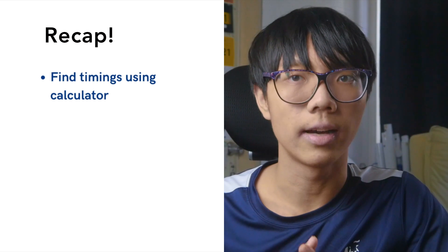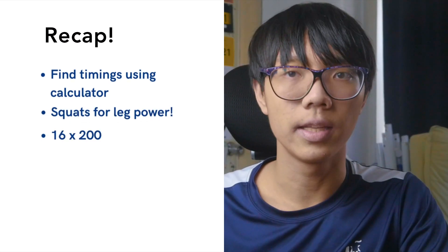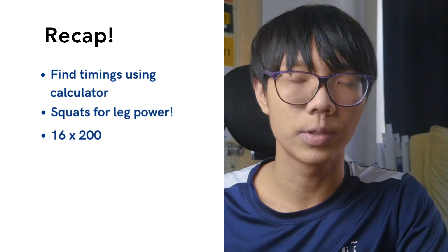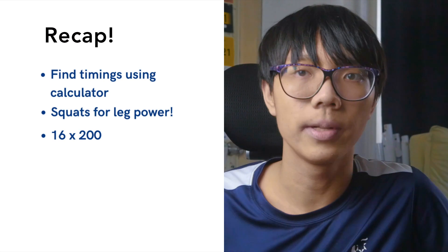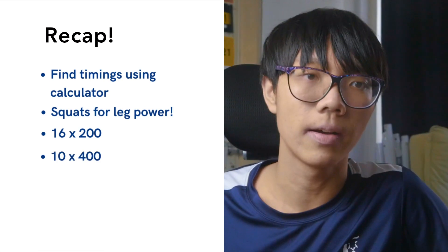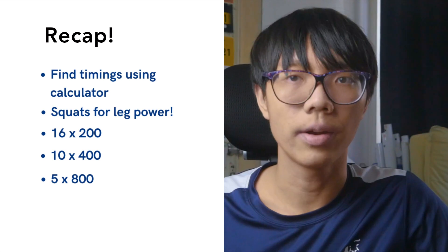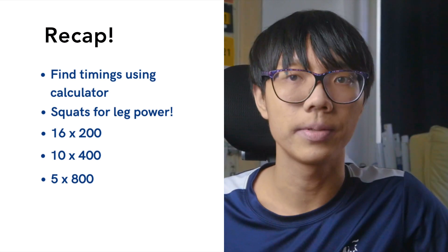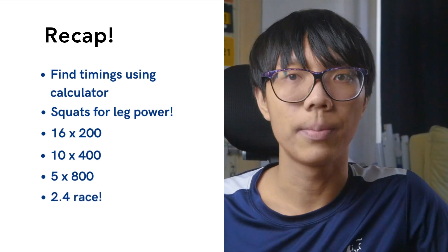As a quick recap: find your training timings using the VDOT calculator, then do squats to build leg power. After that, move on to 200-meter intervals, targeting 16 reps. Use that 200-meter speed to run faster 400-meter workouts, which then makes your 800 meters faster. When you can hit the timings for 5 times 800 meters, you can be confident about hitting your 2.4 goal. Thanks for watching — see you in the next one!